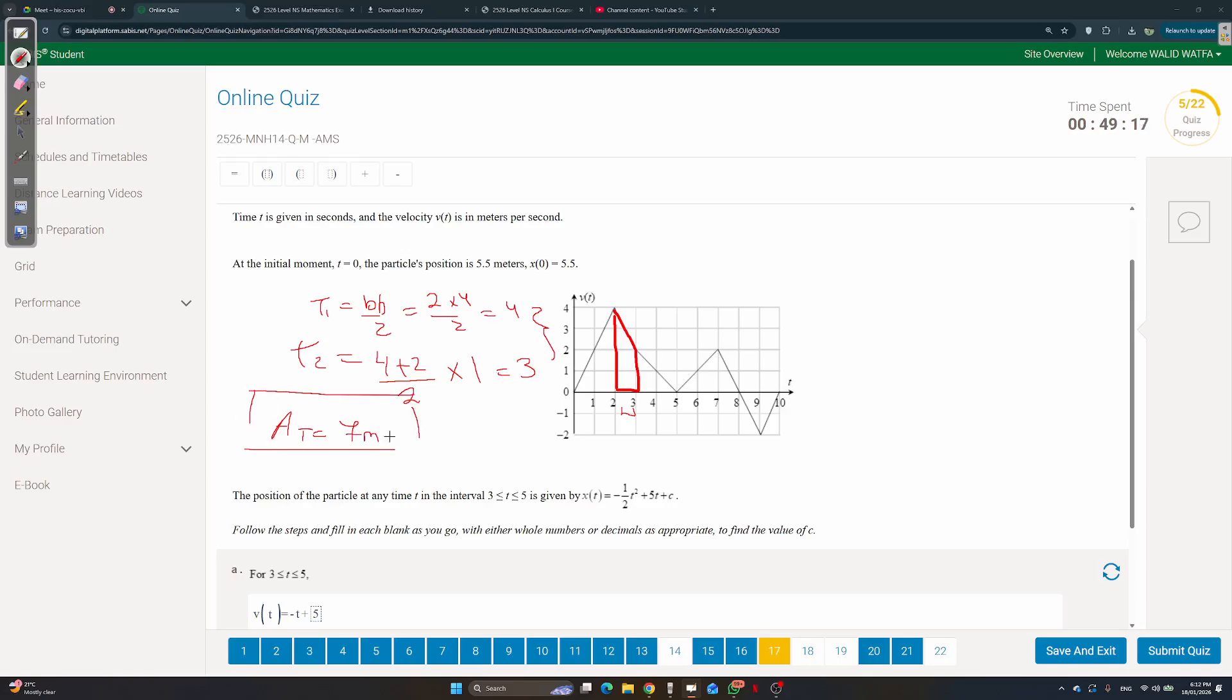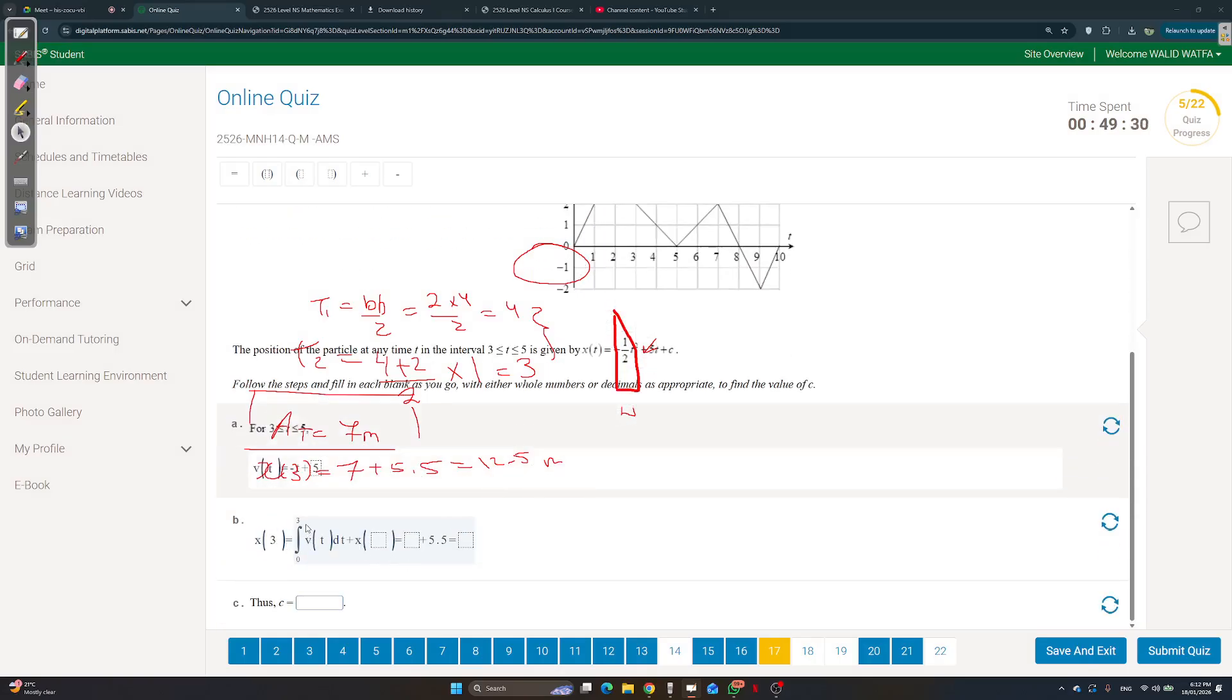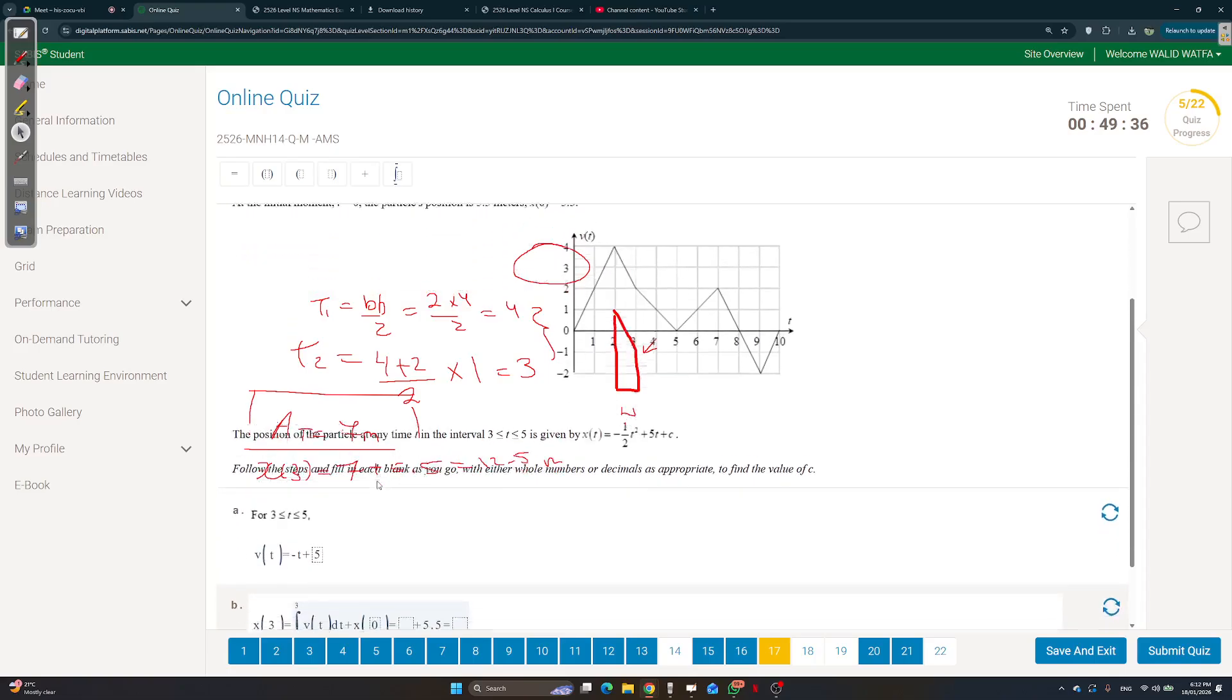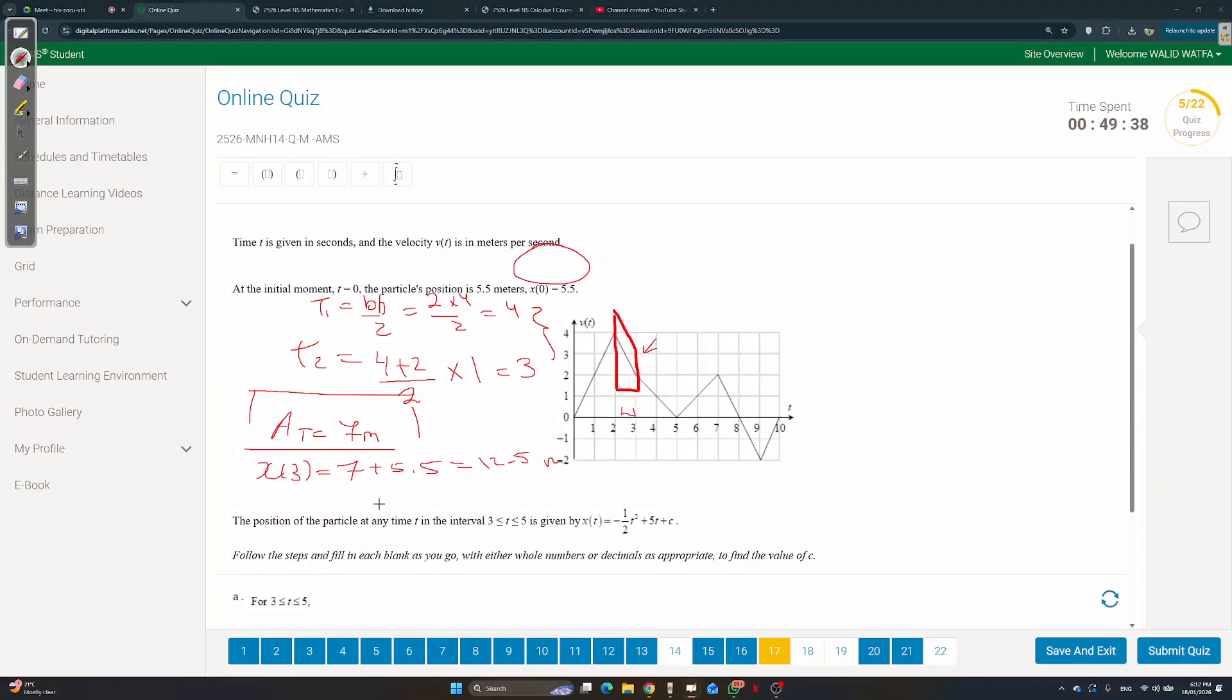But don't forget, if you want to reach 3, you also need to add your initial position. So x of 3 is that 7 meters plus the 5.5 meters, which is 12.5 meters. So let's fill that in. So x of 3 is the integral plus x of 0. Over here I did 7 plus 5.5. This 7 represents the integral from 0 to 3 of V of T.